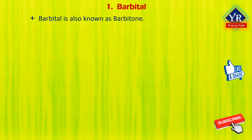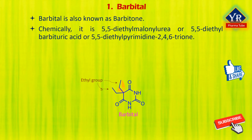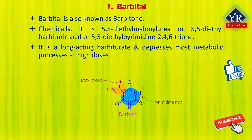The first drug of this lesson is barbitol, also known as barbitone. It is chemically 5,5-diethyl malonylurea, or 5,5-diethyl barbituric acid, or 5,5-diethyl pyrimidine-2,4,6-trione. It is a long-acting barbiturate, and barbitol depresses most metabolic processes at high doses. It was used as a sleeping aid — that is, as a hypnotic — from 1903 until the mid-1950s.